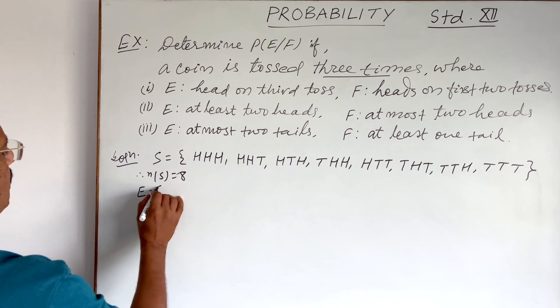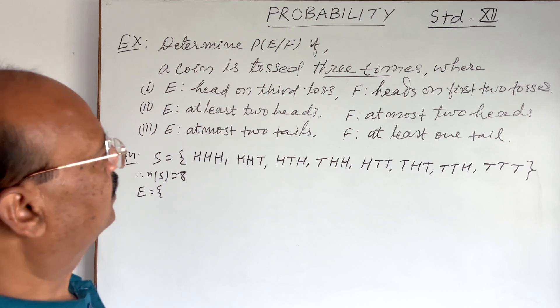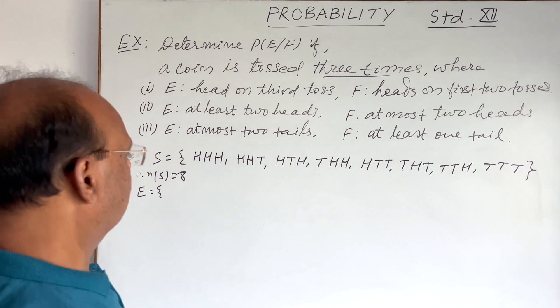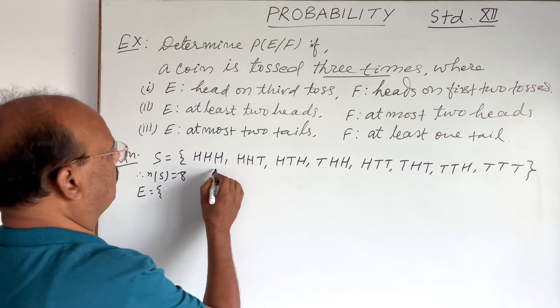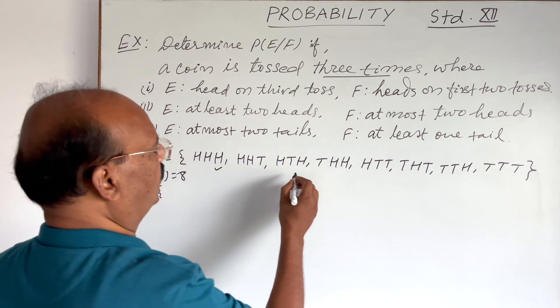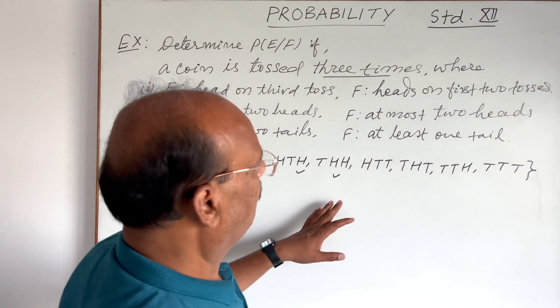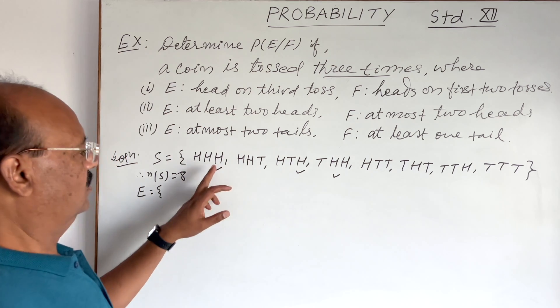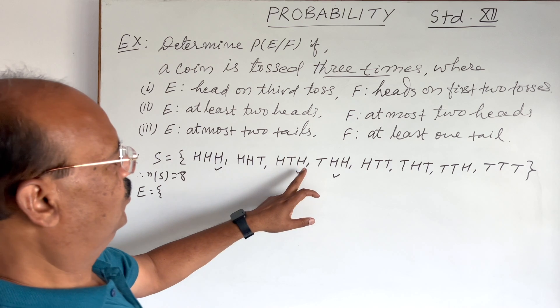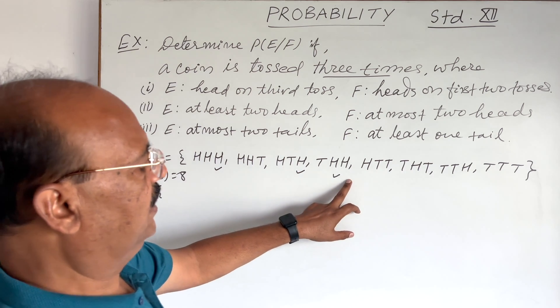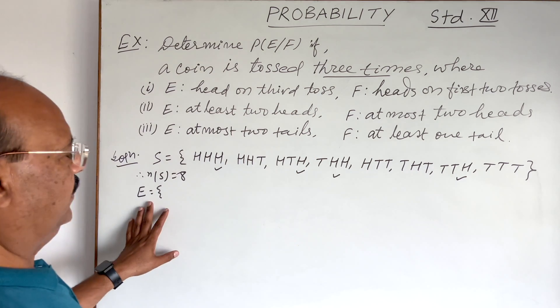Now, event E contains the elements having head on third toss. So we can find out from here, head on third toss, this one, and this one, and this one. Head on third toss. These are the elements of event E.